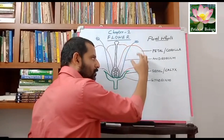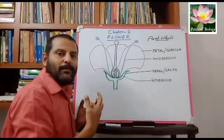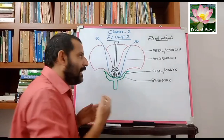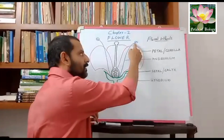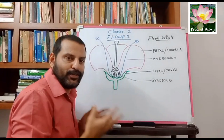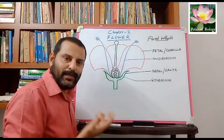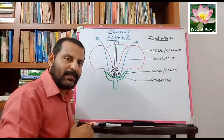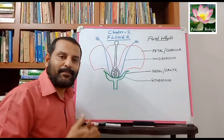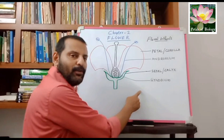When petals are united together they form a corolla. The third part is the stamen — it is the male reproductive part. The stamen contains the anther, connective, and filament; these three together constitute a stamen. The stamen may be united or free: in some plants the anthers are united, and in some plants the filaments are united.